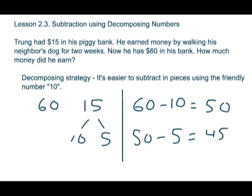So, we have a word problem, or they call them number stories. Truong had $15 in his piggy bank. He earned money by walking his neighbor's dog for two weeks. Now he has $60 in his bank. How much money did he earn?